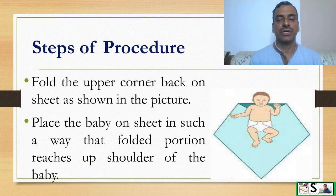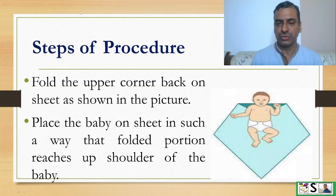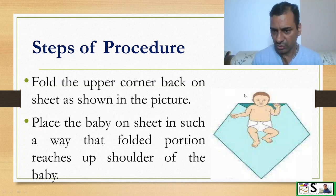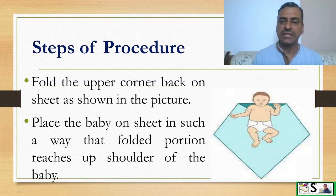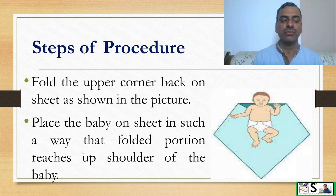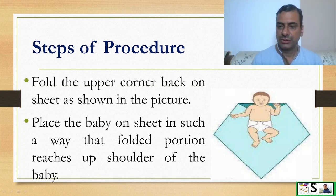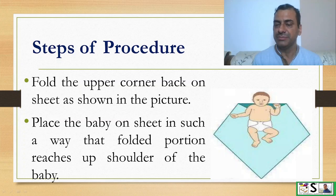Fold the upper corner back on the sheet as shown in the picture. We will fold the upper corner in this way and then place the baby on the sheet in such a way that the folded portion reaches up to the shoulder of the baby. Like this, we will place the baby.